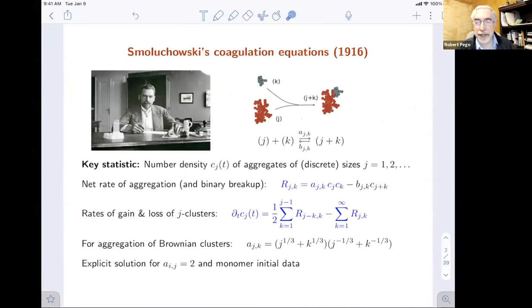That goes back over 100 years now to work of Smoluchowski, the famous Polish physicist who described a set of kinetic equations for chemical reactions, a simple kind where the only statistic of interest is the size of aggregates. Clusters of sizes J and K can merge by producing a cluster of size J plus K with rates determined by mean field statistics, basically.